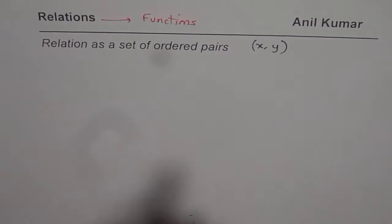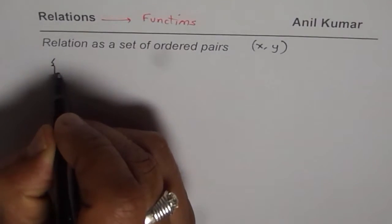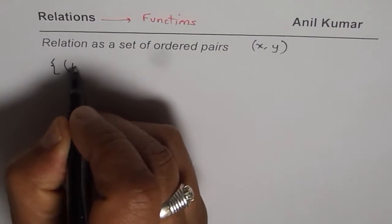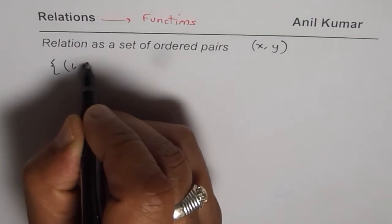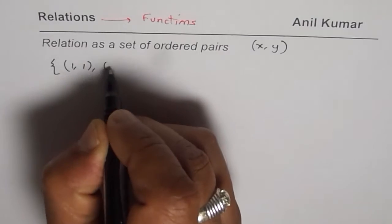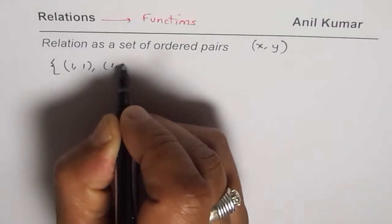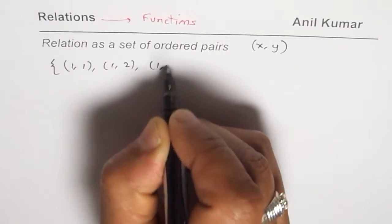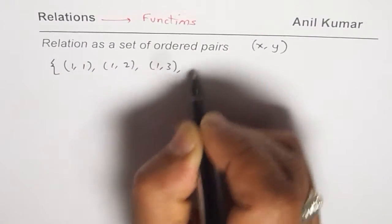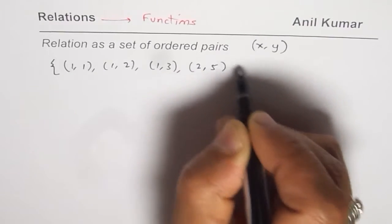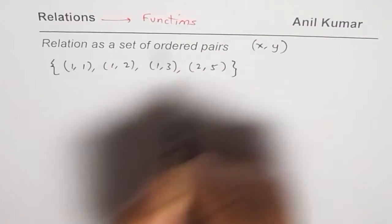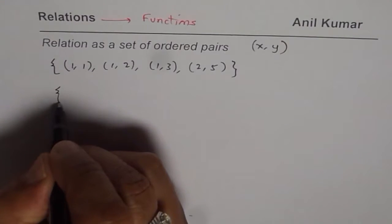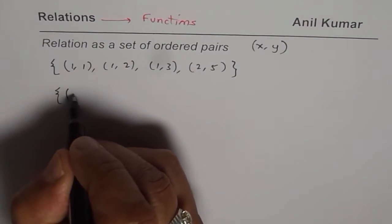As an example, let me take a few sets of ordered pairs. The first relation has: (1,1), (1,2), (1,3), and (2,5).